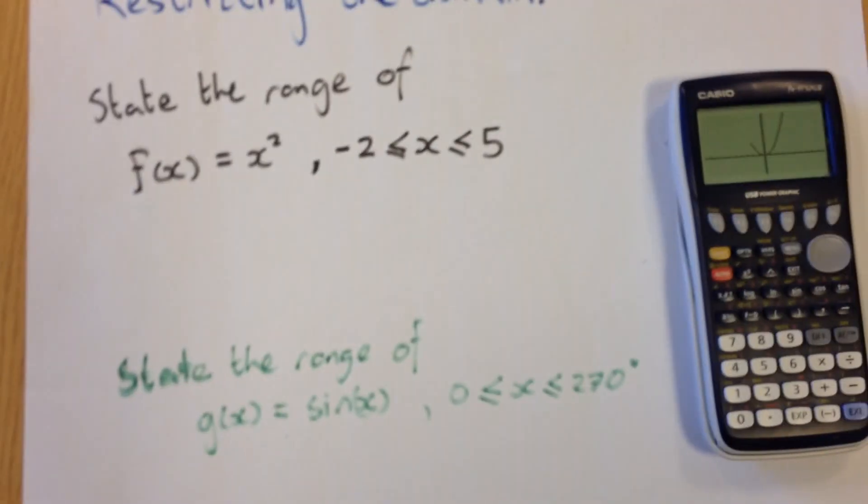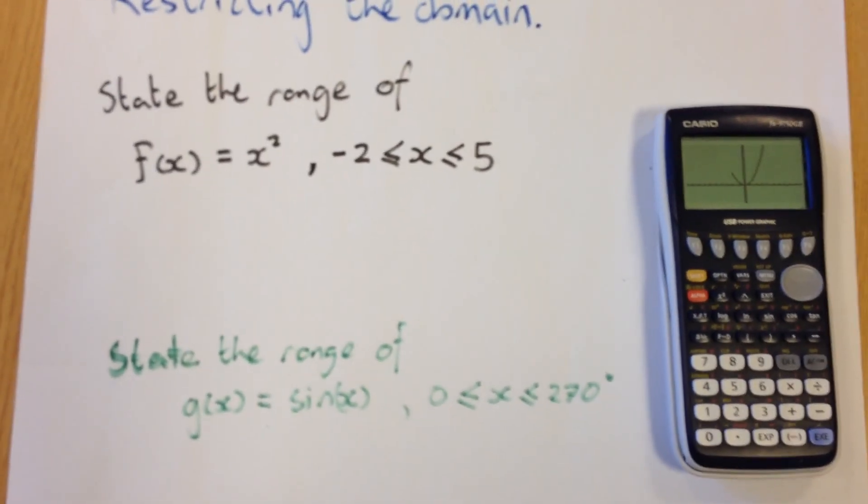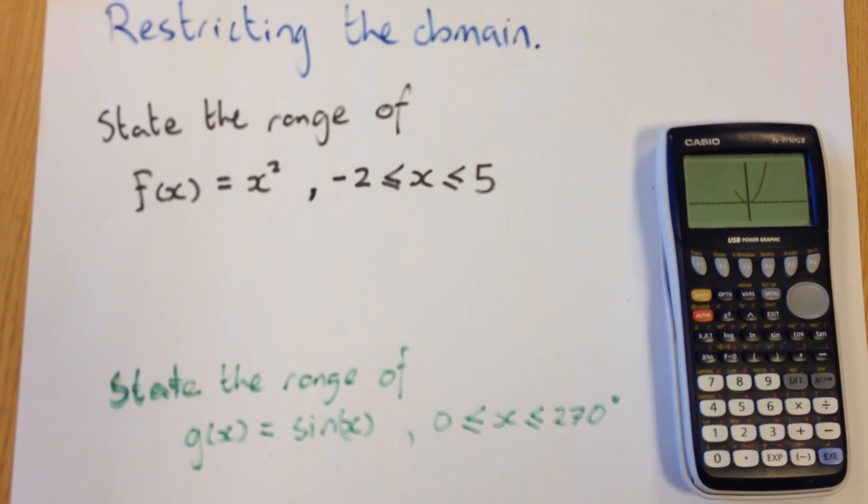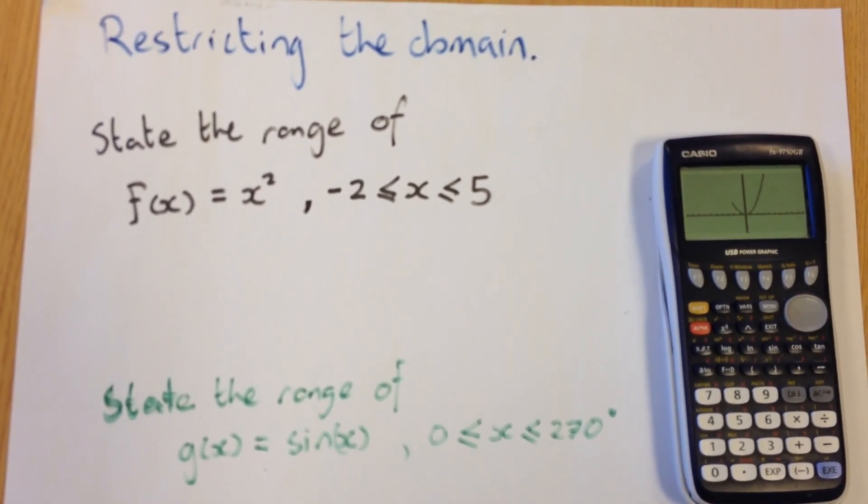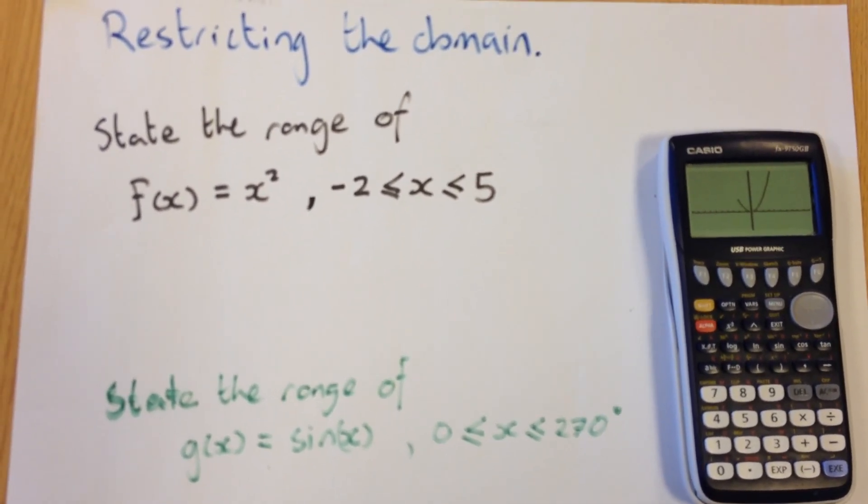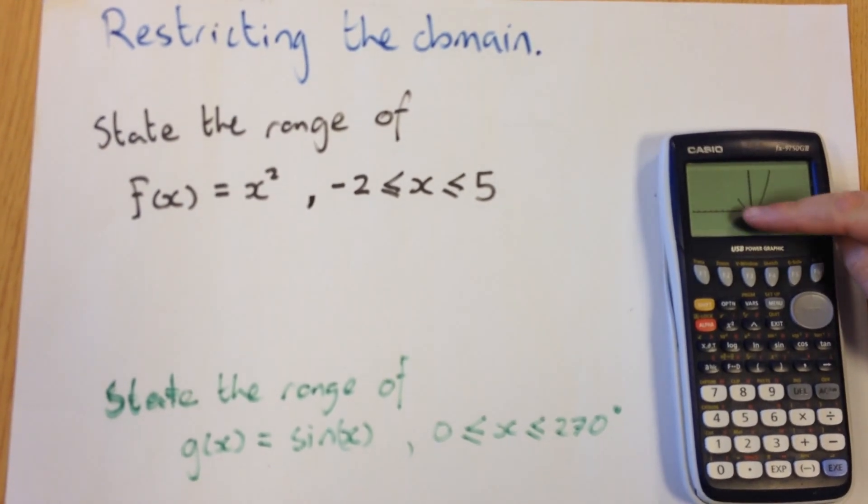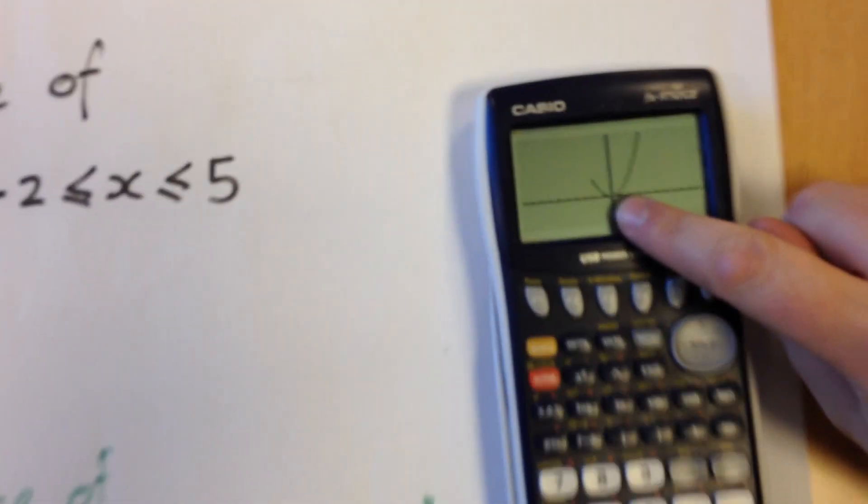Now what we want to do is find the range, so the range is looking at the y axis. We need to find the smallest possible value of y and the greatest possible value of y for that graph. Now if we look at it, the smallest possible value is this minimum here.